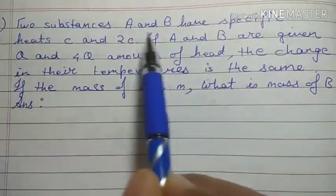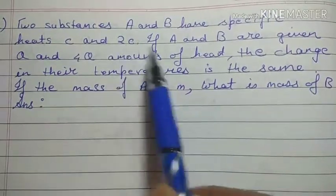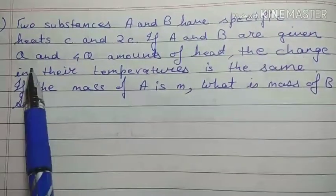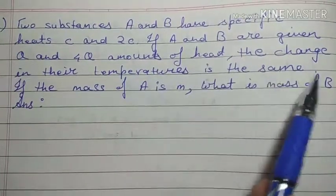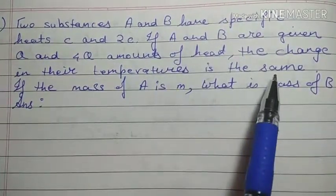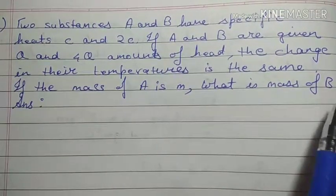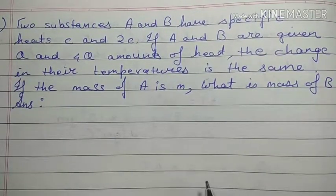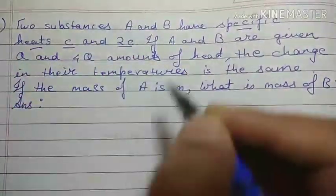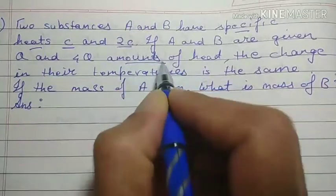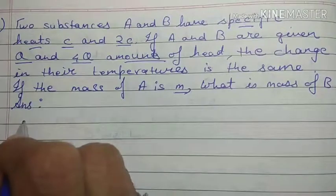Let's check this problem. Two substances A and B have specific heats c and 2c. They are given q and 4q amounts of heat. The change in their temperatures is the same. If the mass of A is m, what is the mass of B? So quickly, let's underline whatever is given: specific heats c and 2c, amounts of heat q and 4q, and mass m.